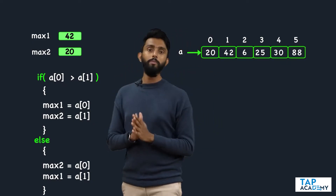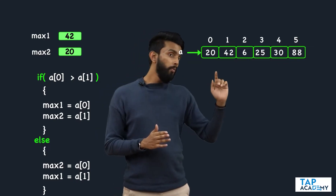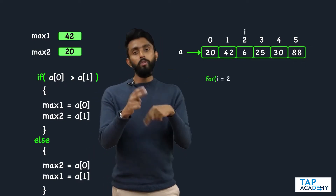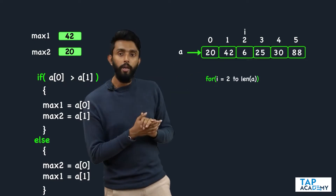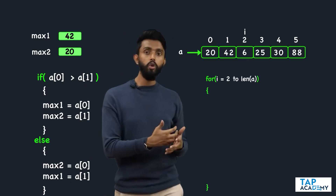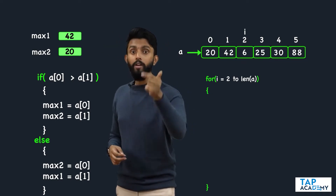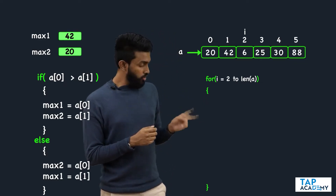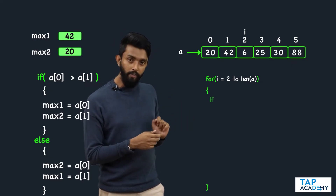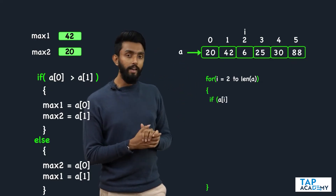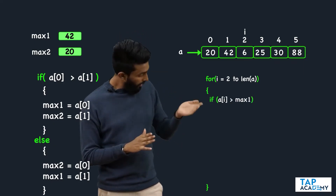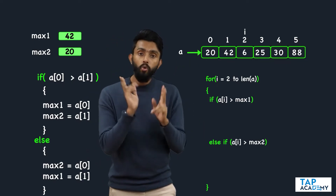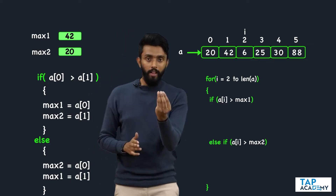Now I am going to run a loop where i starts from the third element — that is index 2 — to the end, so for i equal to 2 to length of array. Inside this loop I must write code to find the true max1 and max2, the largest and second largest. I will check two conditions: first, is the element at index i greater than max1? Else, is it greater than max2?